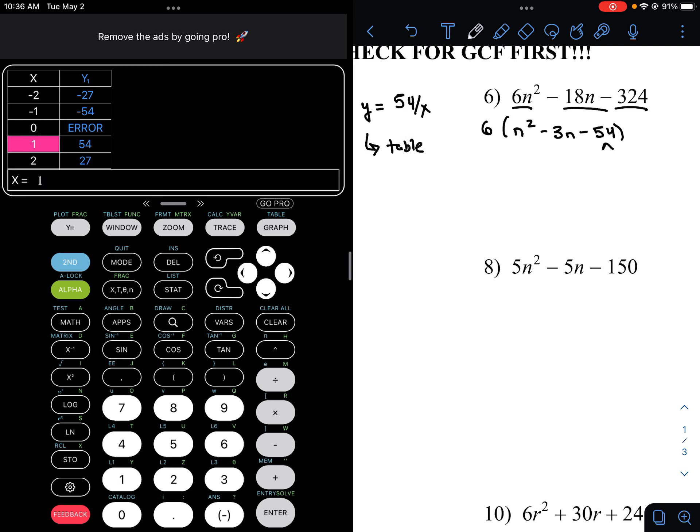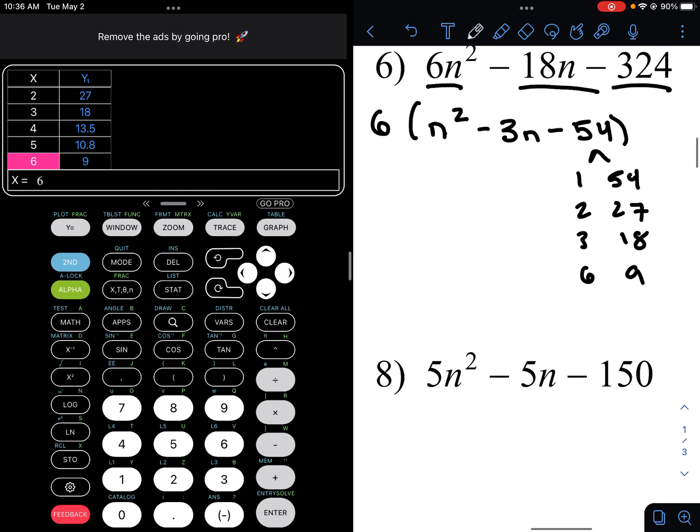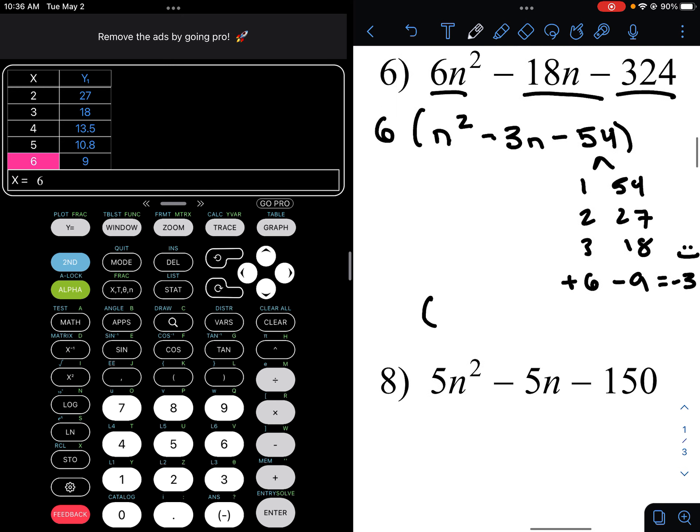This here lists all the factors, 1 in 54, 2 in 27, 3 in 18, 4 in 13.5. You wouldn't want that one, but we have at least a few factors to get us started. 1, 54, 2 in 27, and 3 in 18, and 6 in 9. In this case, we're looking for the ones that have a difference of negative 3. So if you think I could have negative 9 and positive 6 equal negative 3, then you're on the right track. So that final answer would be the 6 out front. Don't forget it. n plus 6 and n minus 9. That is your answer.